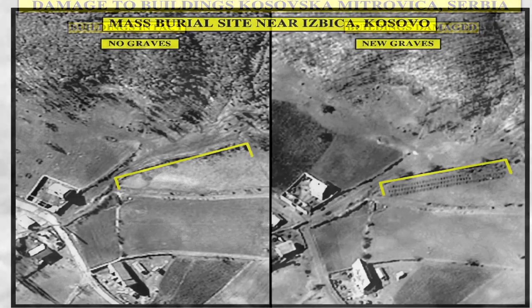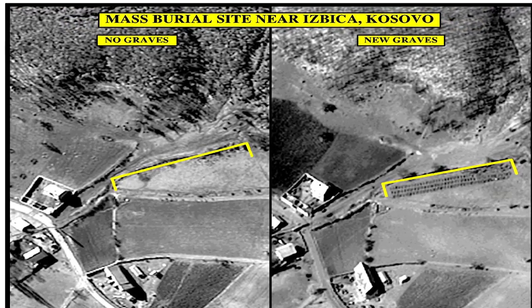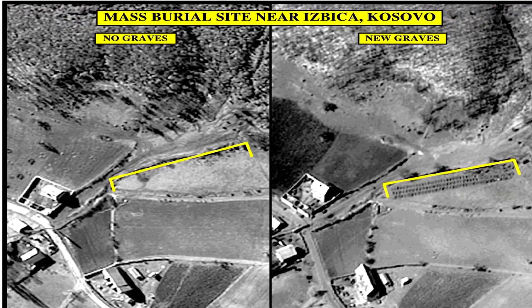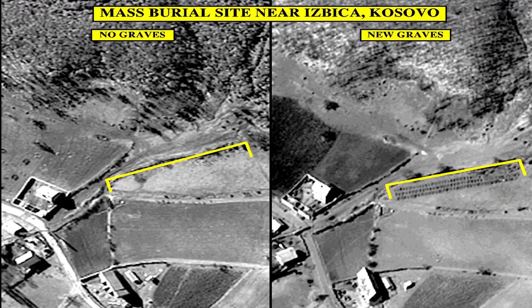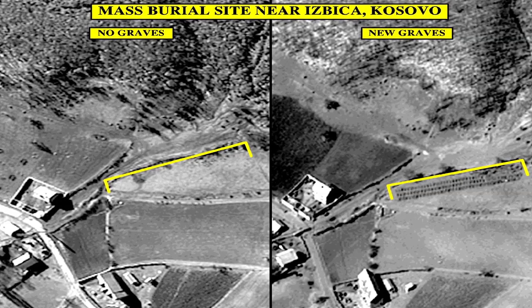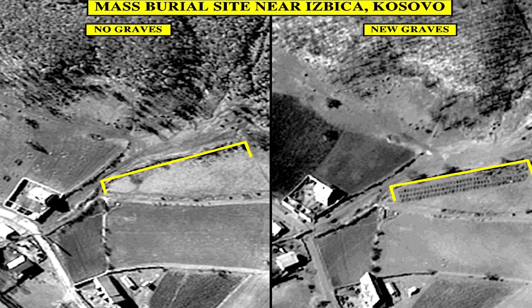Those plowed fields ended up being graves. So the imagery and use of geospatial intelligence allowed us to marshal enough evidence for the U.S. to become engaged in Kosovo.